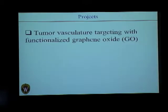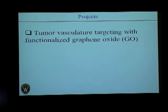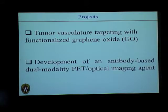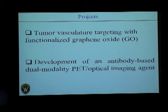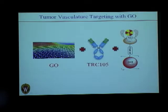With this overview, I would like to introduce my two projects. The first is targeting tumor vasculature using functionalized graphene oxide nanosheets. The second project involves developing an antibody-based dual-modality agent for PET and optical imaging in breast cancer — specifically 4T1 breast cancer cells.